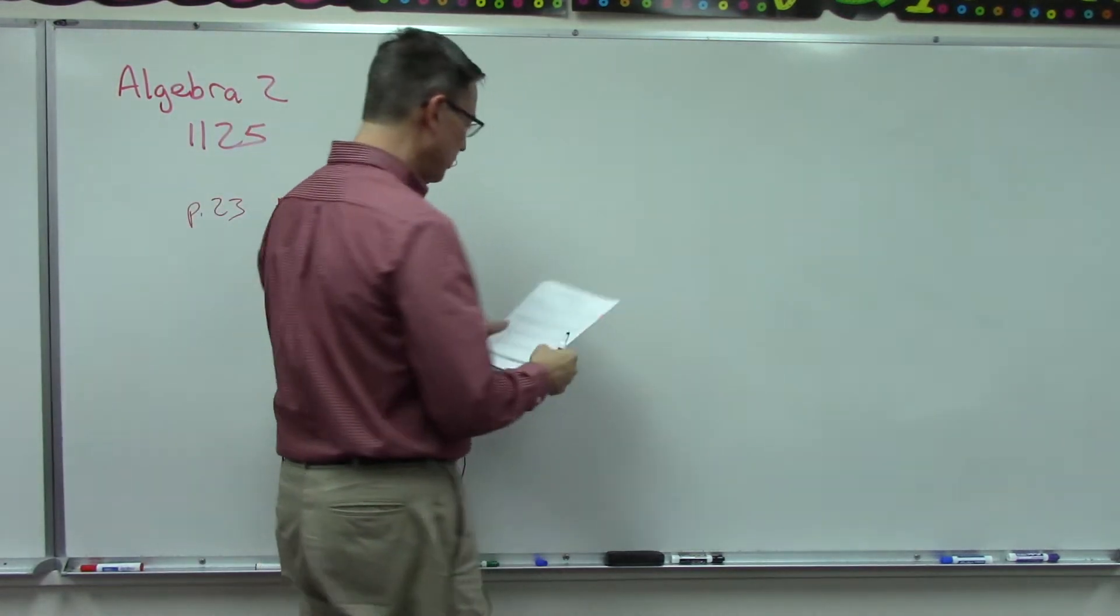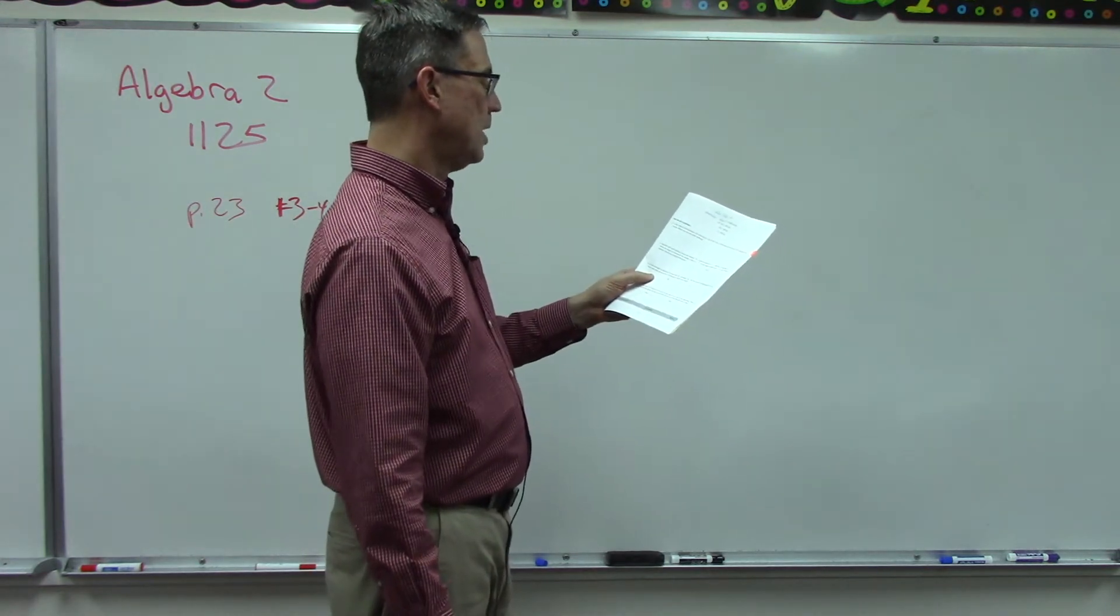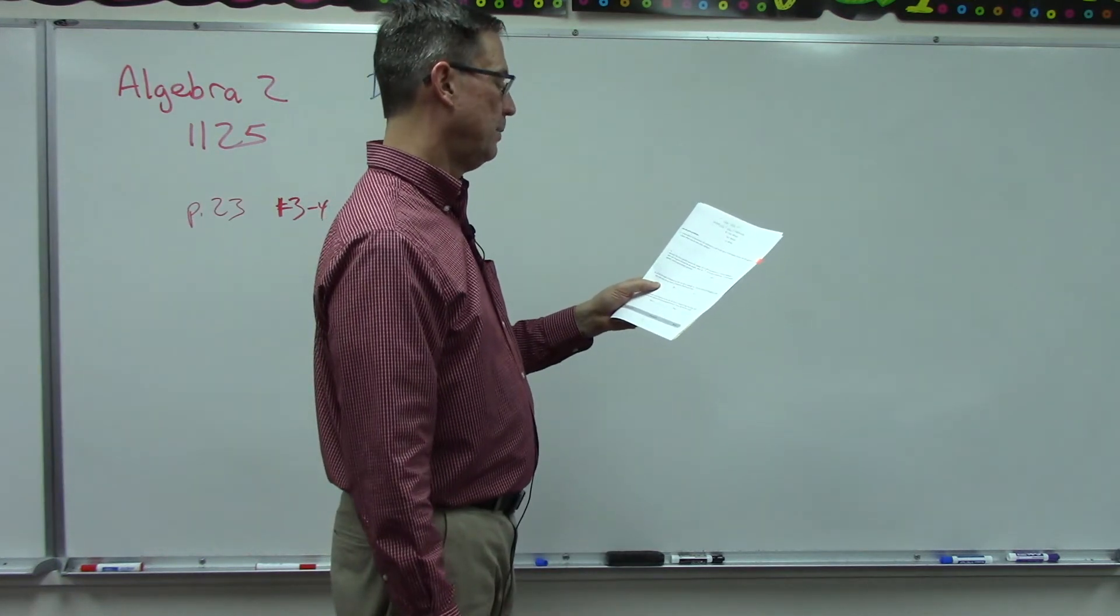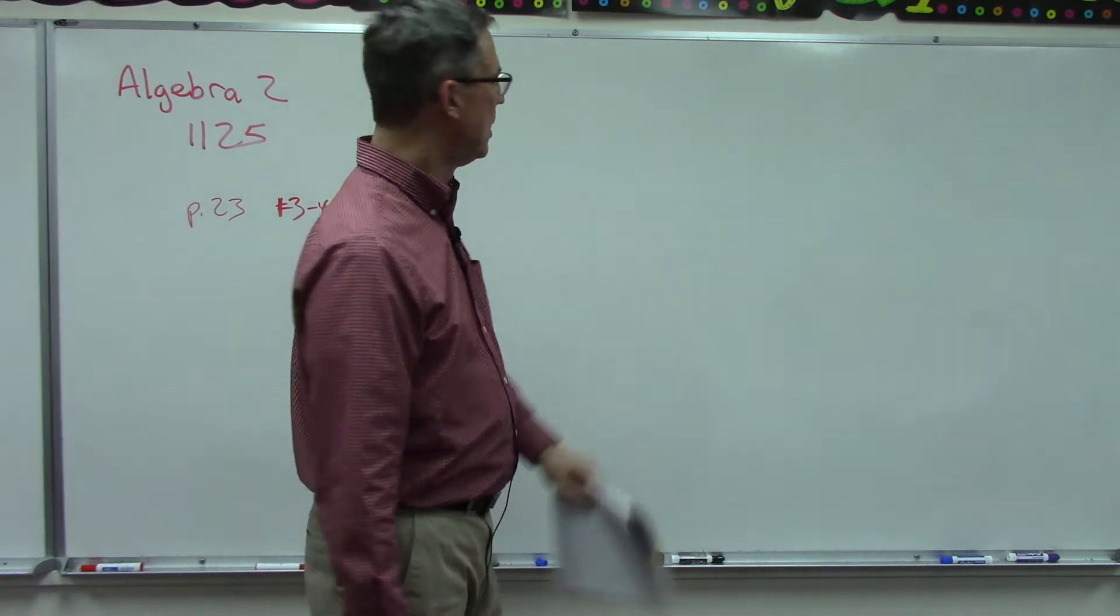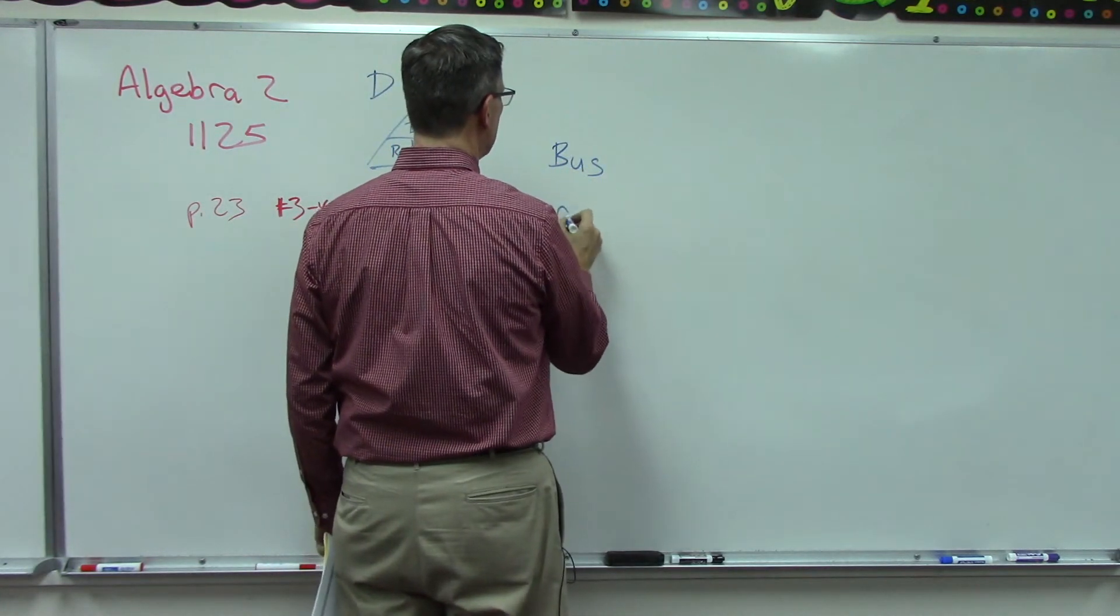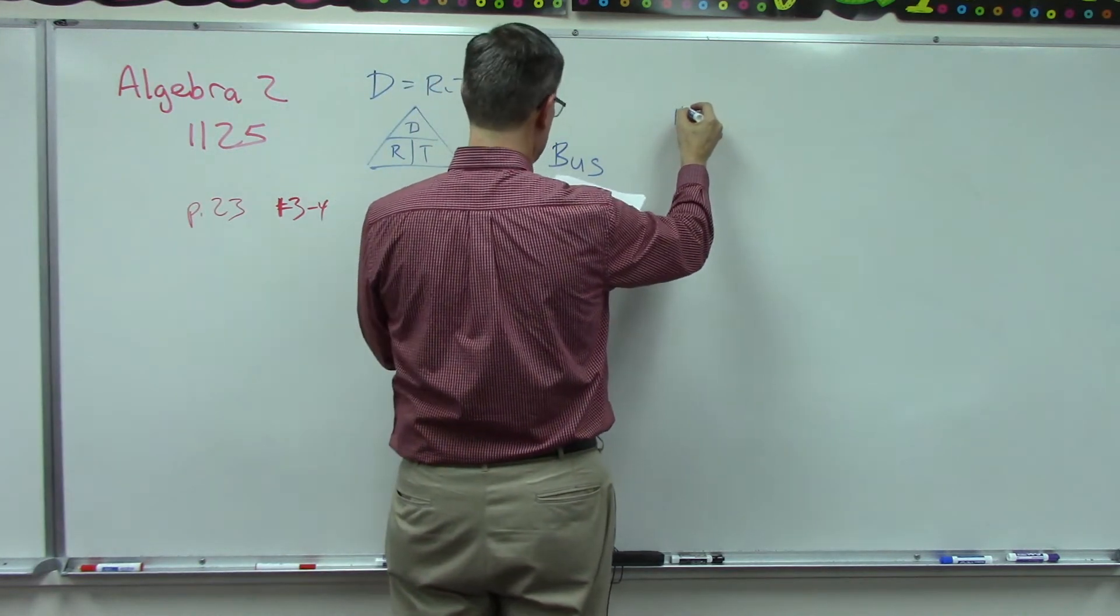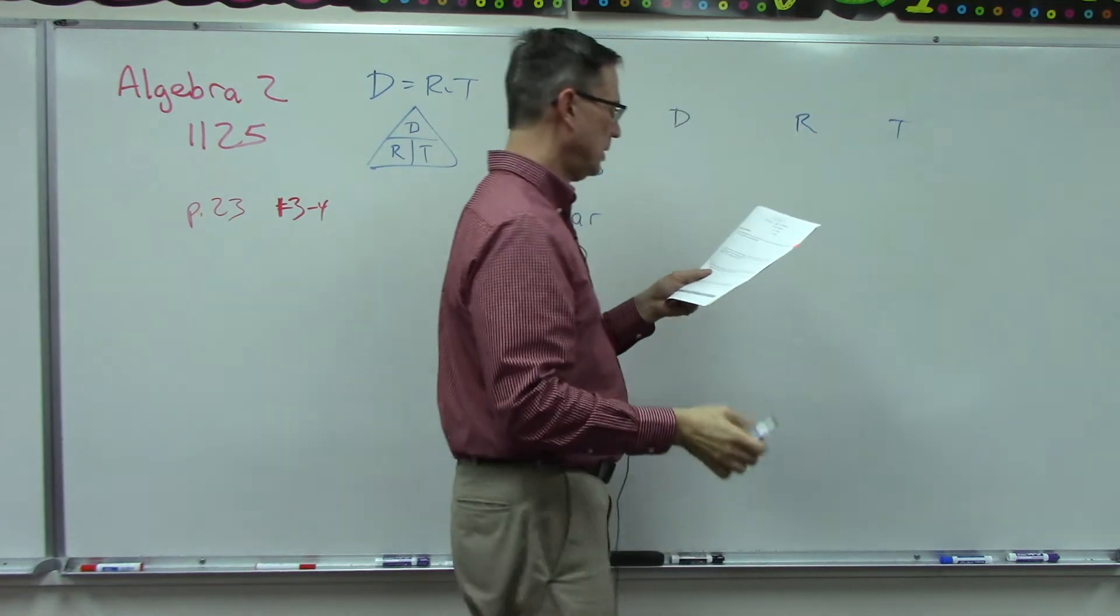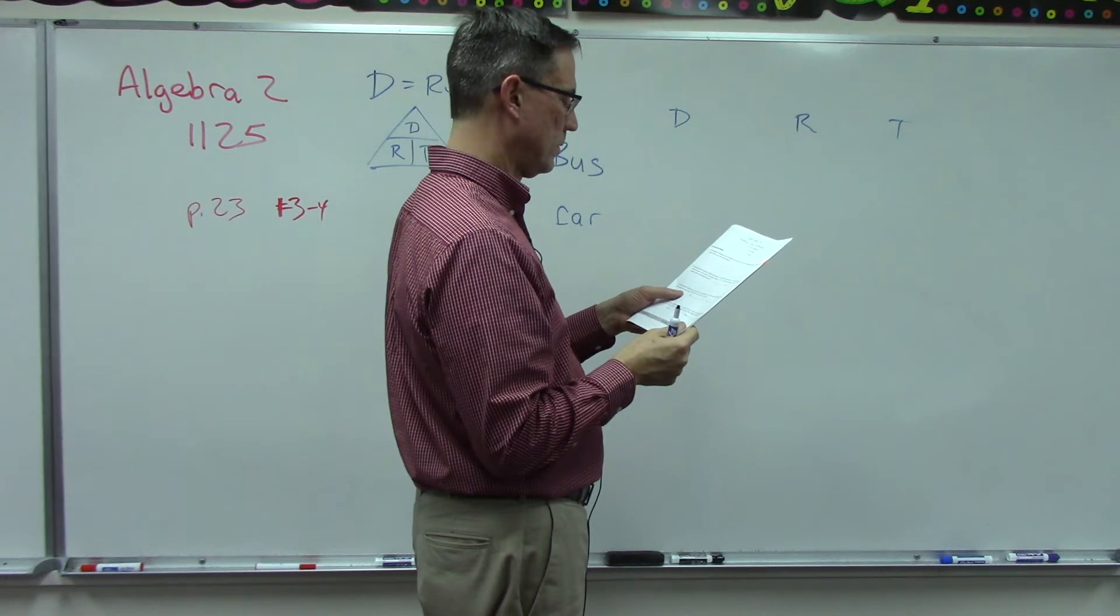I always think of the magic triangle, so the distance is in the top, rate times time, and we'll have to solve to figure some things out here. Let's look at number three. It says a bus travels at six kilometers an hour less than a passenger car. The bus travels 80 kilometers in the same time that the car travels 112 kilometers. Find the rate of each. Let's set up a little chart here.